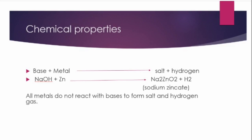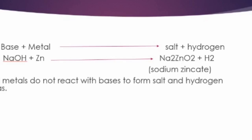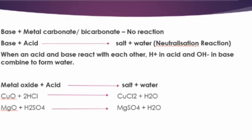Not all metals can react with bases to form salt and hydrogen, so this reaction does not happen with all metals. The next reaction we learned about acids was: acids react with metal carbonates or metal hydrogen carbonates to form salt, carbon dioxide, and water. But here, base plus metal carbonate or metal bicarbonate — there is no reaction. Why? Because metal carbonates and metal bicarbonates are themselves bases, so a base cannot react with another base.